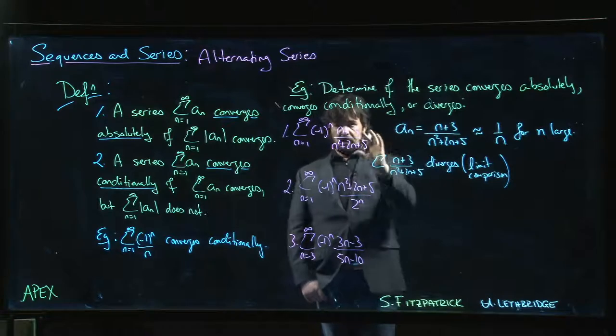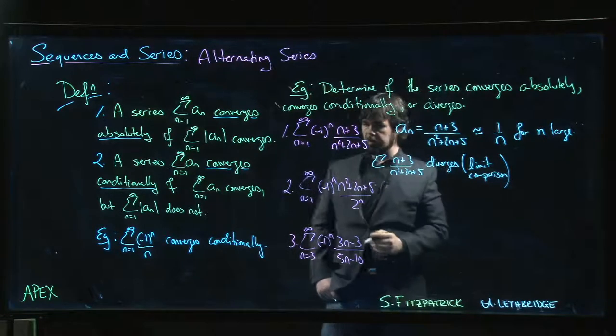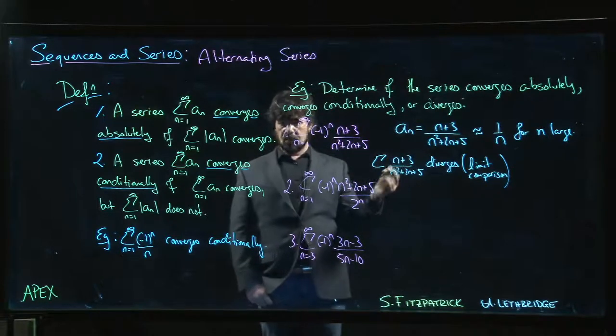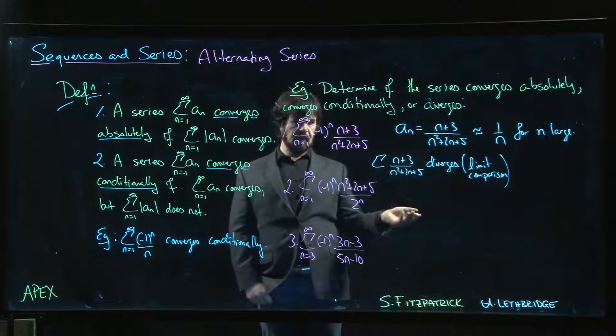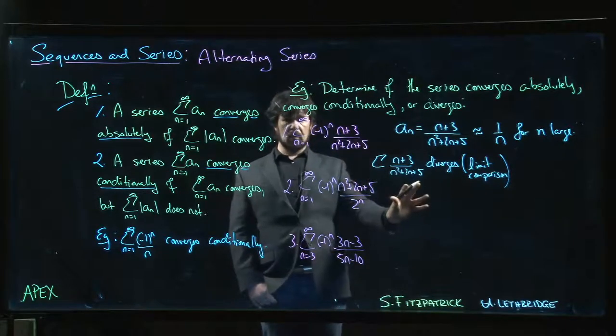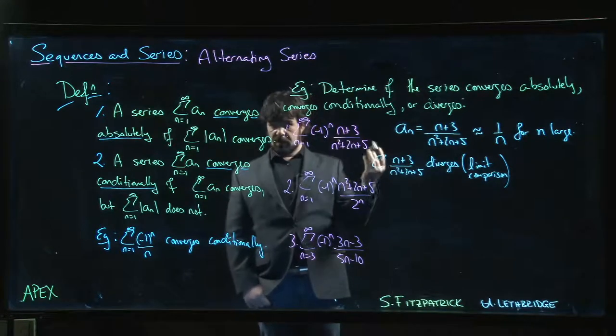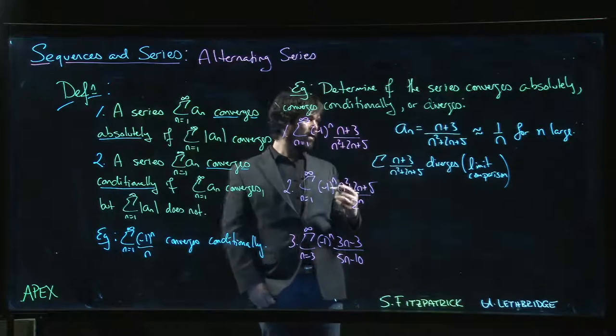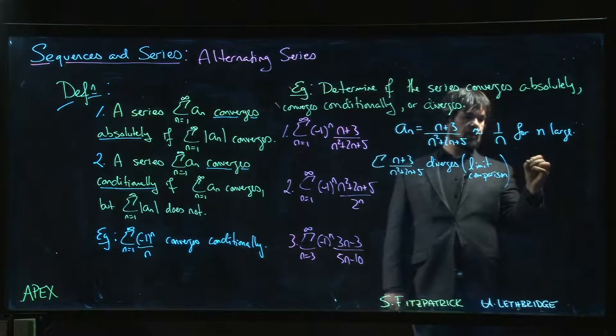But it does converge. The terms are positive, they go to zero in the limit, and they're decreasing. You can use the derivative to check - take the function, look at the derivative, figure out where it's decreasing. It's more work than we can fit on the board here, but you can check that this does satisfy the conditions of the alternating series test, so it is a convergent alternating series.